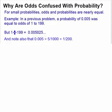One thing to address is why odds are confused with probability. Often times people are talking about odds when they really mean probability, and vice versa. For small probabilities, odds and probabilities are nearly equal. In the previous problem, we had a probability of 0.005, and we ended up with odds of 1 to 199. If you divide 1 by 199, you get approximately 0.005025, which is very close to 0.005. So 0.005 is 1/200, which is very close to 1/199.